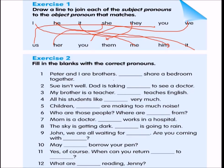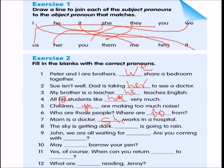Exercise 2: Fill in the blanks with the correct pronouns. 'Peter and I are brothers. We share a bedroom.' 'Sue is ill — dad is taking her to see a doctor.' 'My brother is a teacher. He teaches English. All his students like him very much' — him because it is a masculine word. 'Children, you are making too much noise.' 'Who are those people? Where are they from?' 'Mom is a doctor. She works in a hospital.' 'The sky is getting dark. It is going to rain.' 'John, we are all waiting for you. Are you coming with us?' 'May I borrow your pen? When can you return it to me?' 'What are you reading, Jenny?'